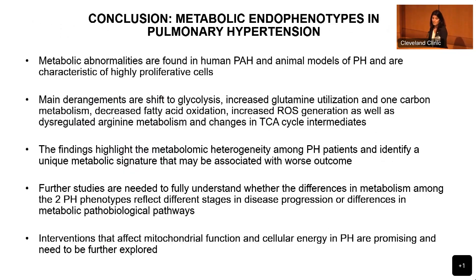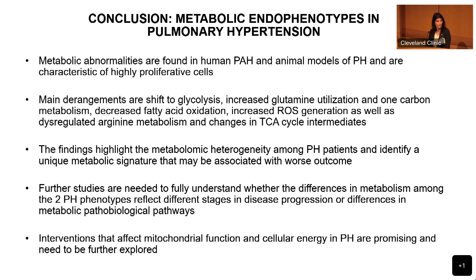In conclusion, metabolic abnormalities are found in human PH and animal models and are highly characteristic of proliferative cells. The main derangements are shifting glycolysis, increased glutamine utilization, one-carbon metabolism alteration, decreased fatty acid oxidation, increased ROS generation, and dysregulation in the arginine and TCA cycle pathways. Our findings highlight metabolic heterogeneity among PH patients, with a unique signature associated with worse outcome and RV function. Whether these metabolic differences reflect patients at different disease stages or represent causative differences remains unclear. Dr. Hamness will now talk about therapeutics. Thank you.